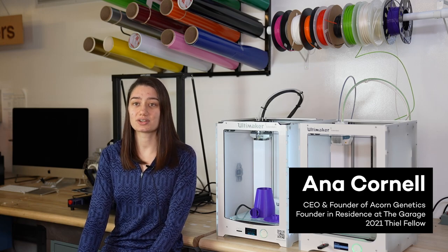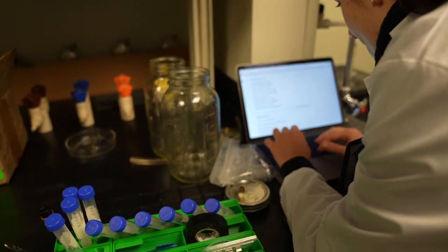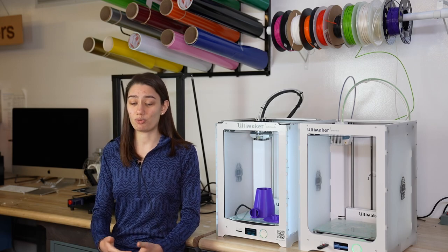Acorn Genetics builds autonomous, affordable, and private genetic sequencers. When I was 16, my dad was diagnosed with a genetic disorder, and this was a big turning point for me. I got very interested in genetics at that point.